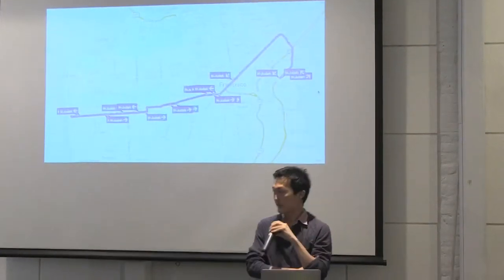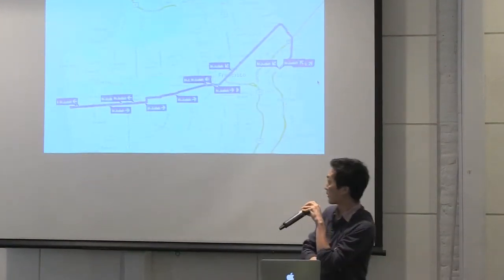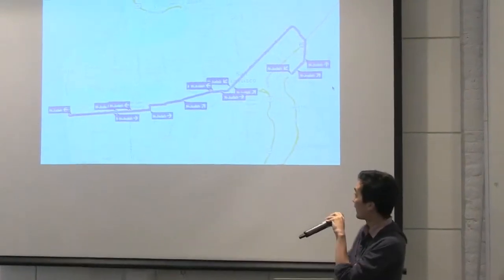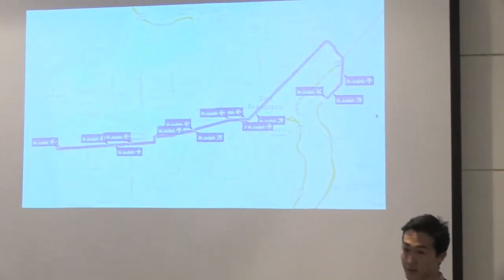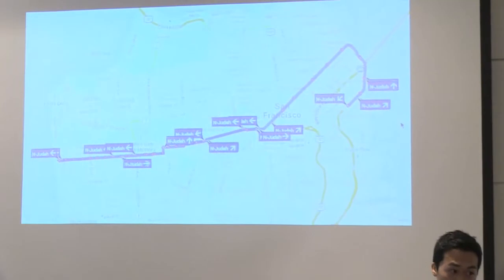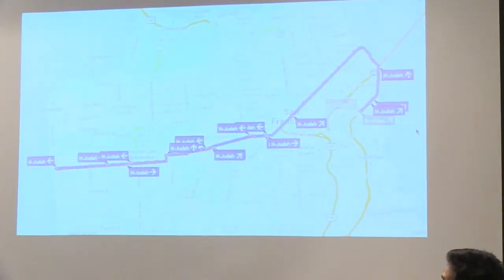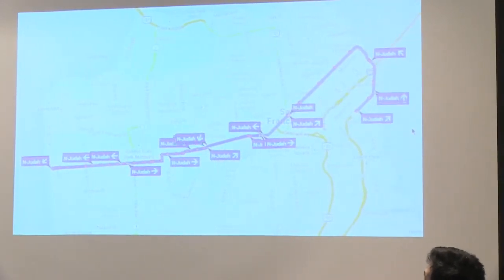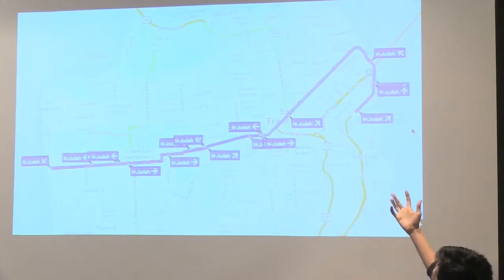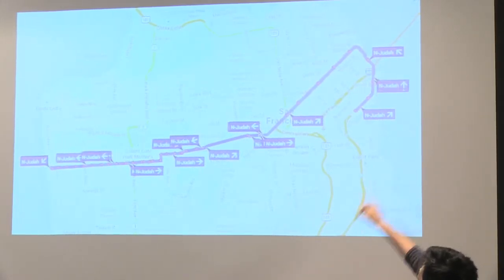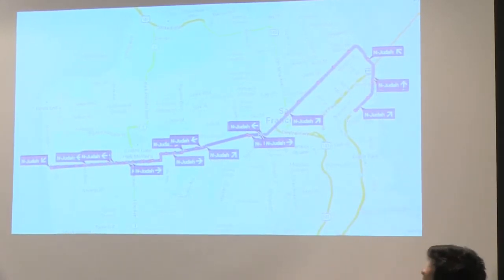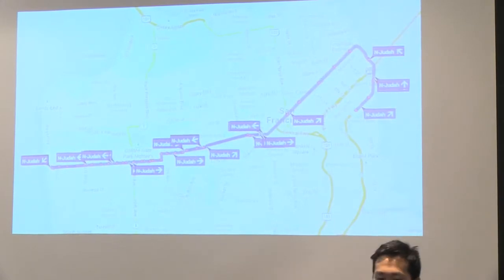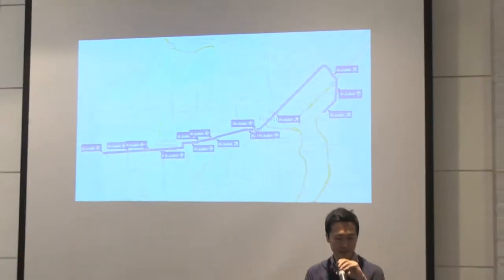This data is all available in real time through Nextbus. They have a free API and also this animation on their website which gives you an idea of how delayed things are. You can kind of see there's a pretty long delay between like downtown trains. But I didn't really think this was good enough at a glance.